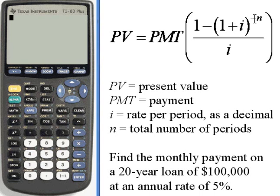And then we raise that to the negative n. n is the total number of payment periods that you have over the entire course of the loan. We take that whole numerator and divide it by i, which once again is the rate per period as a decimal.